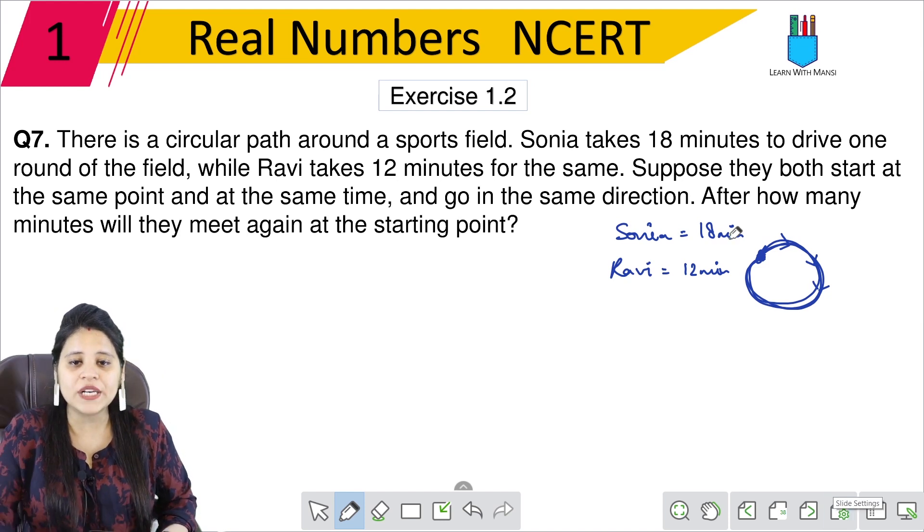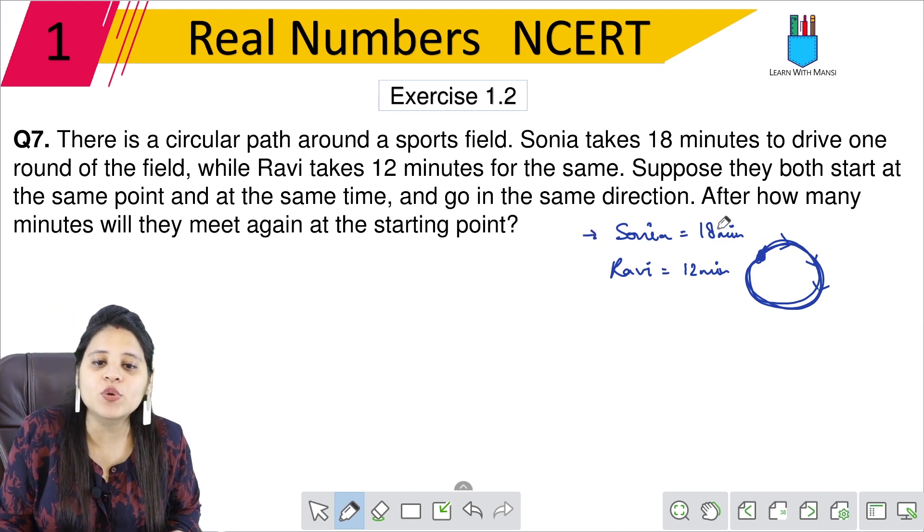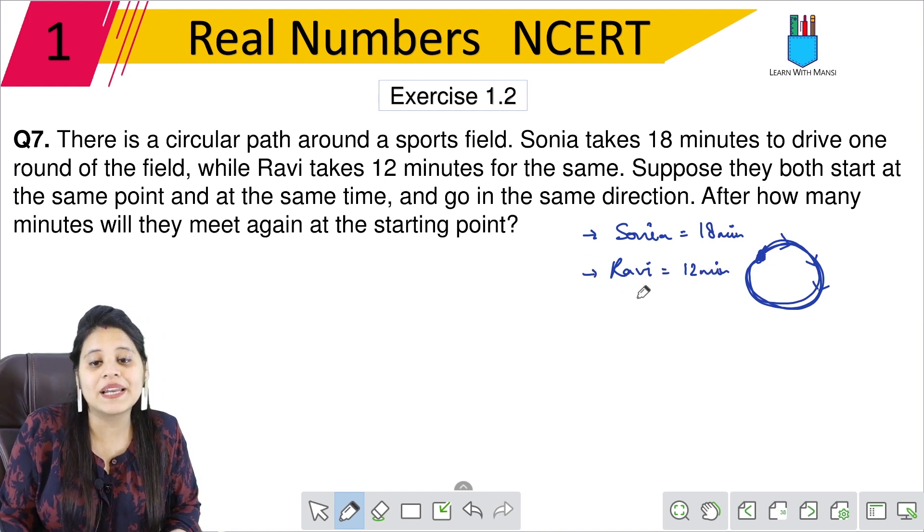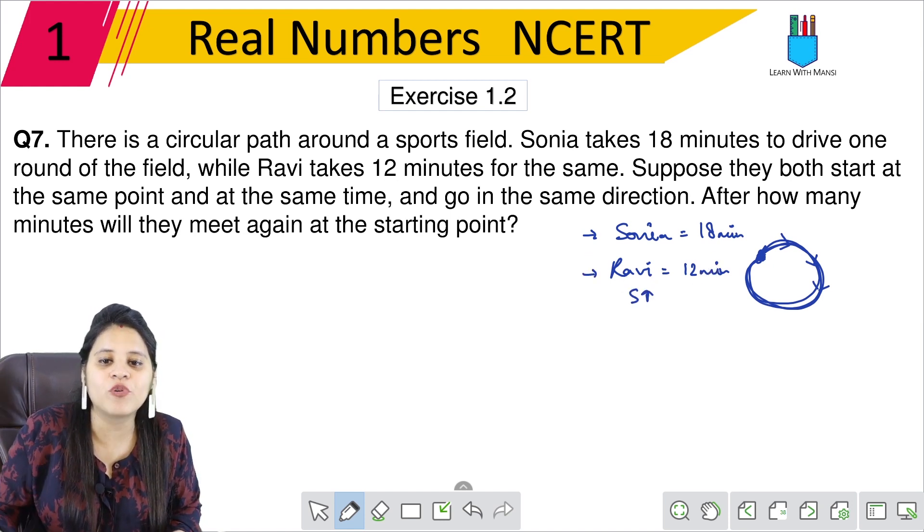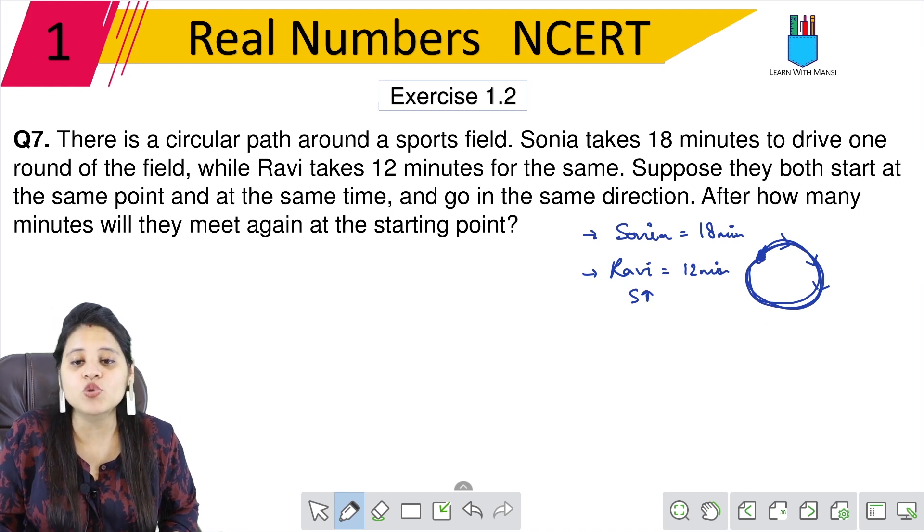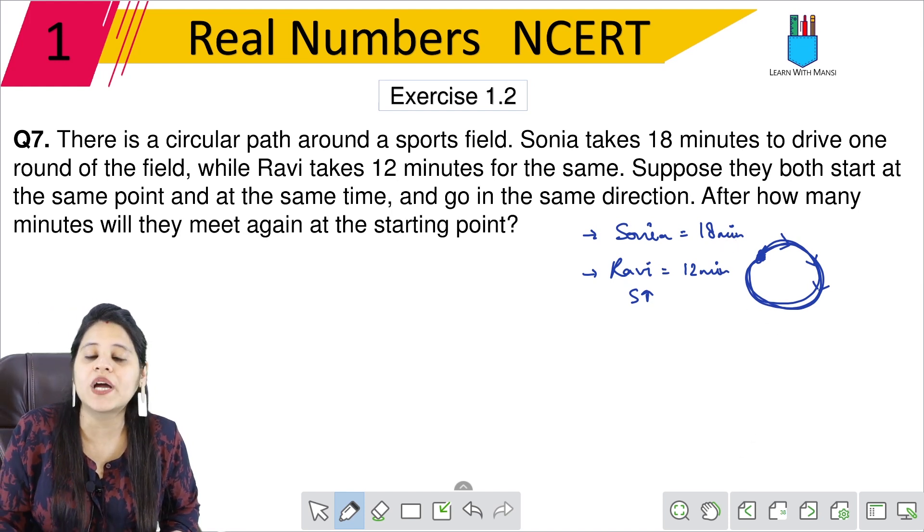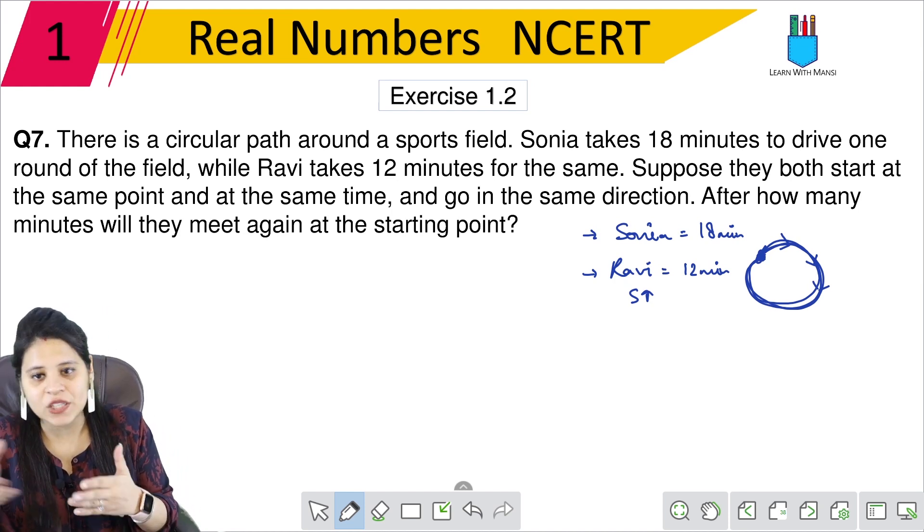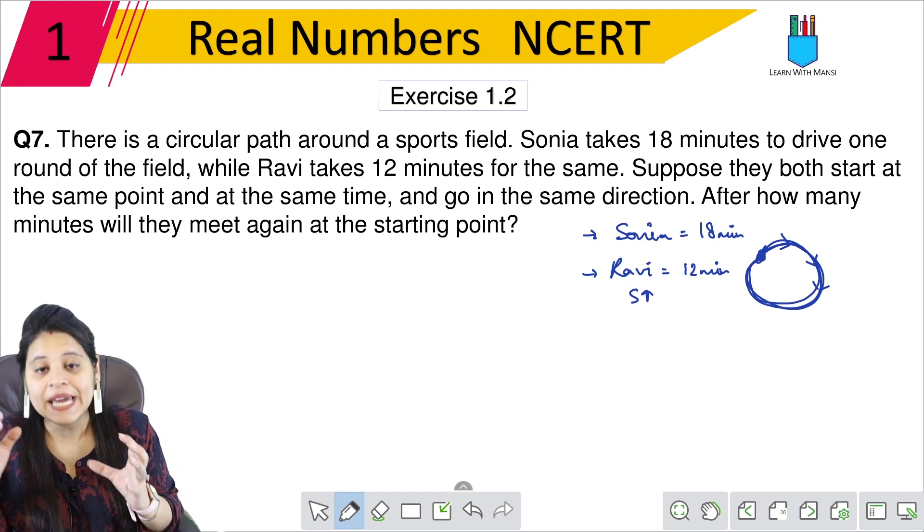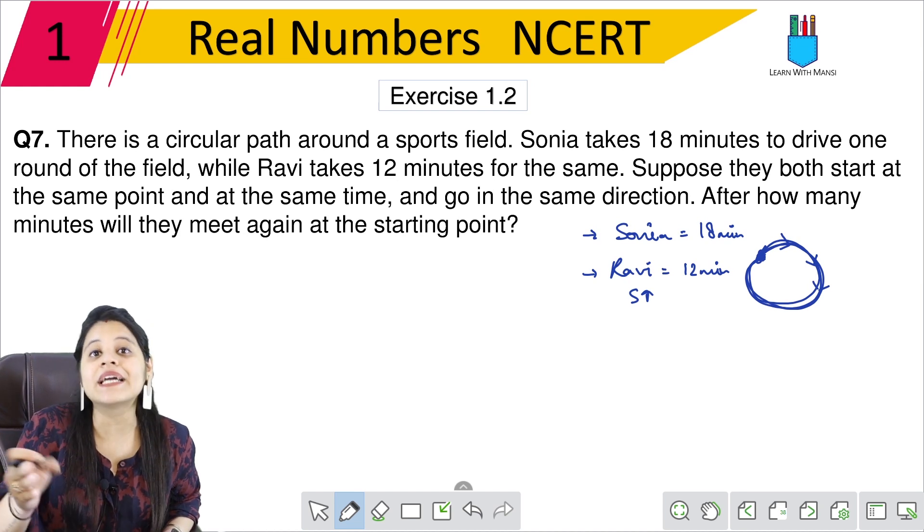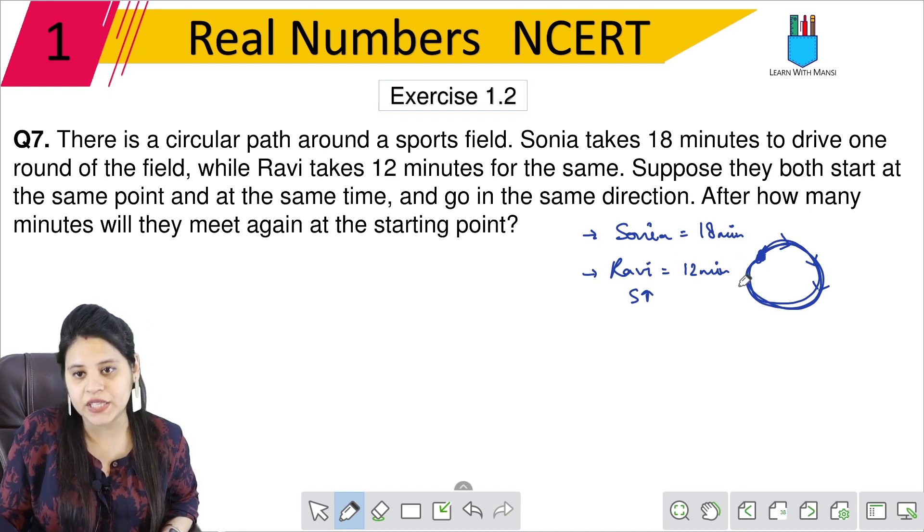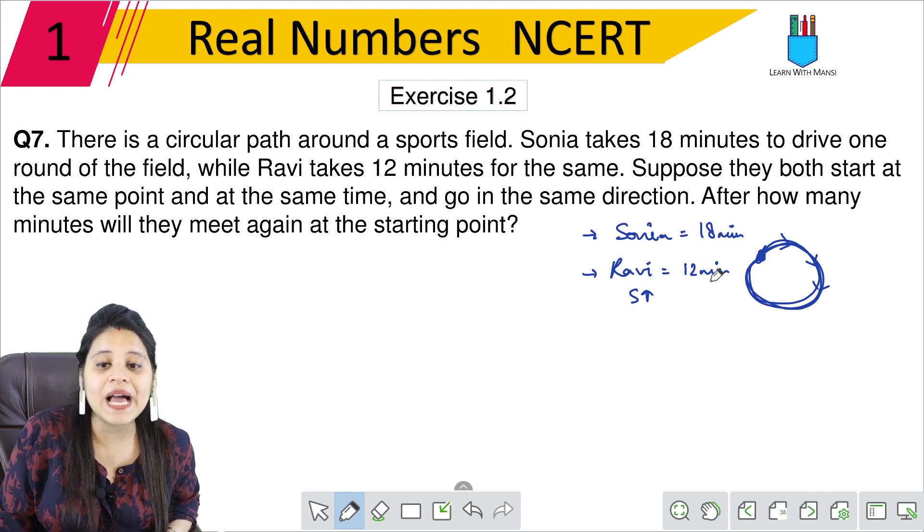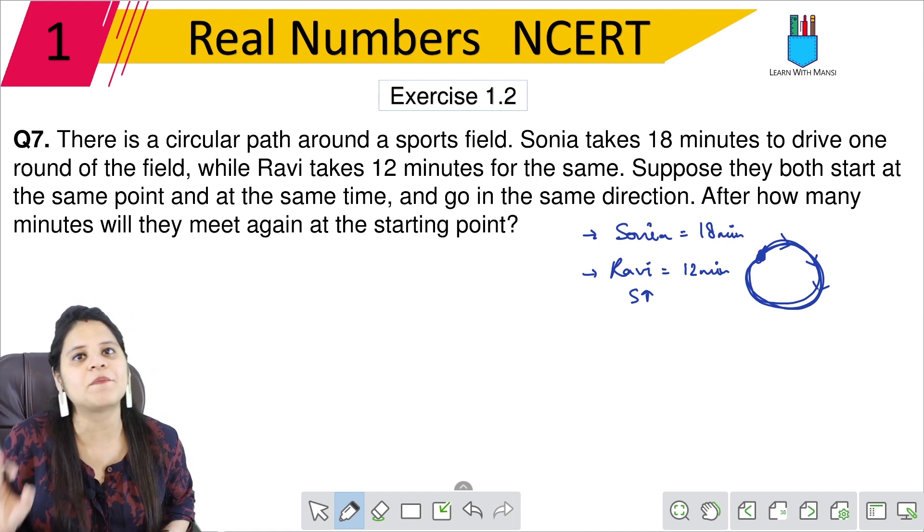So here, one thing is clear. Sonia takes 18 minutes to complete the whole round. It doesn't matter how many rounds each completes - Sonia takes 2 rounds, Ravi takes 3 rounds - it's possible to meet at the starting point. So let's find when this happens.